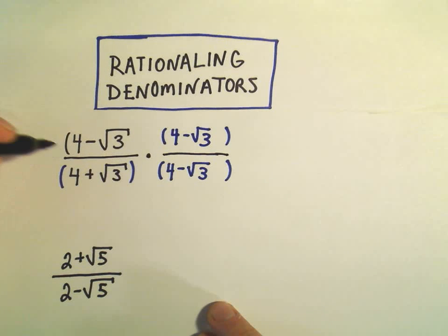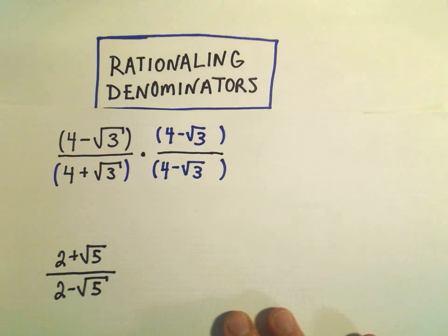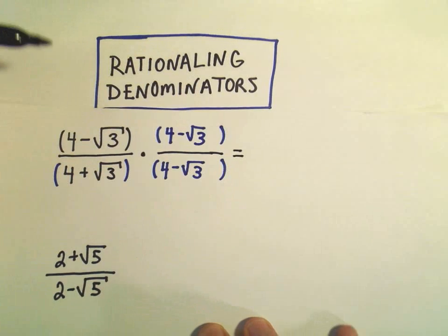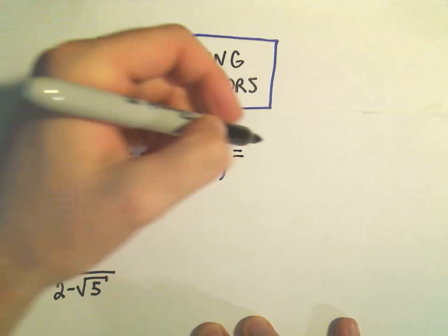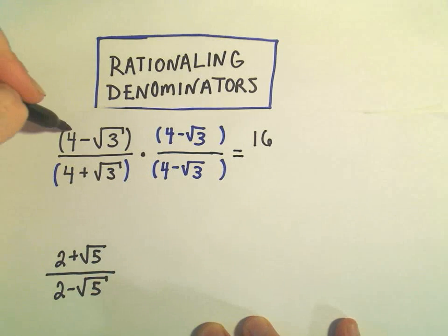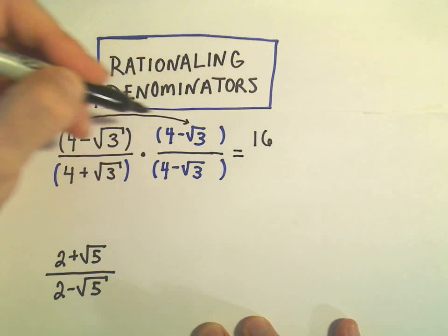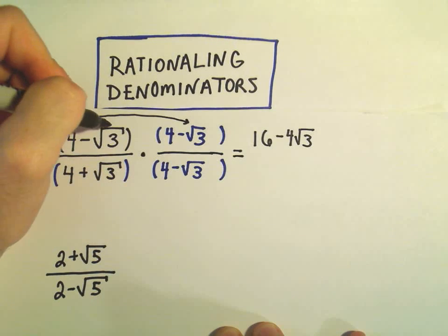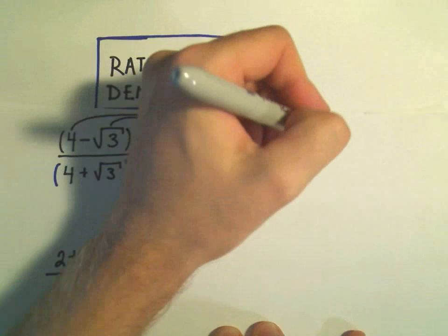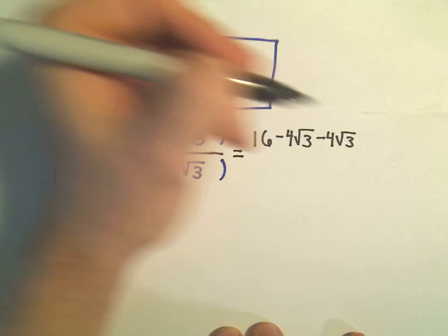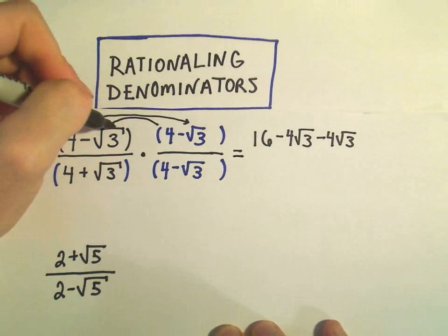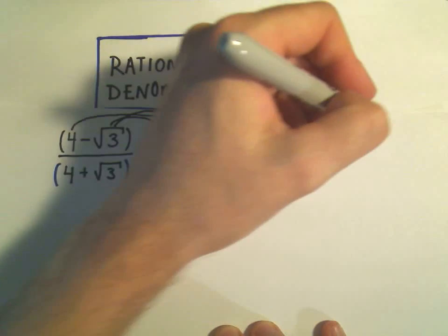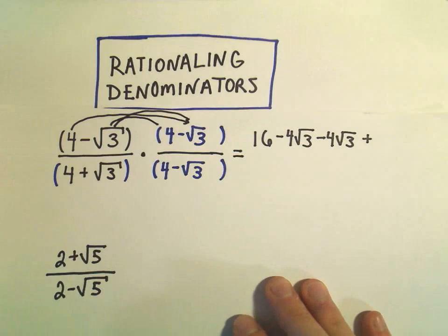I like to put everything in parentheses in the numerator and denominator of each fraction just to remind myself that I do have to distribute. So we'll get 4 times 4, which would be 16 in the numerator. If I distribute my 4 to the negative root 3, we'll get minus 4 root 3. On the inside, I'll get a negative root 3 times 4, which I'm going to write as minus 4 square root of 3. And then our outside terms, we would have a negative root 3 and a negative root 3, which would make a positive square root of 9, which simply gives us 3.